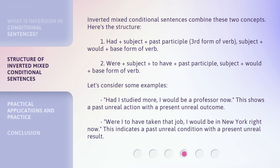Inverted Mixed Conditional Sentences combine these two concepts. Here's the first structure: Had + subject + past participle (third form of verb), subject + would + base form of verb.